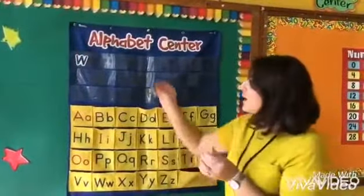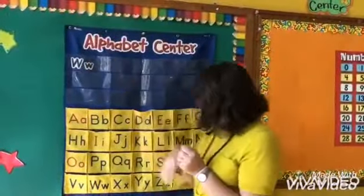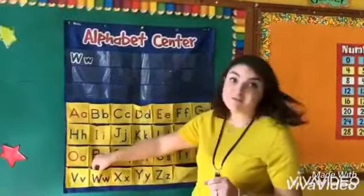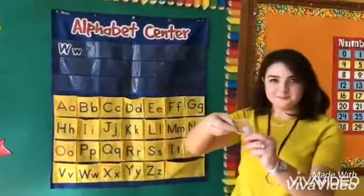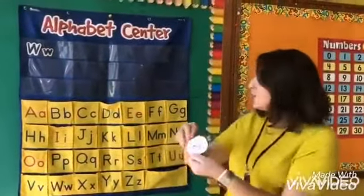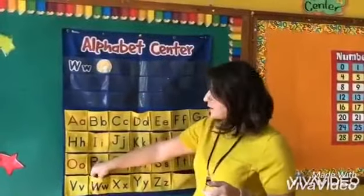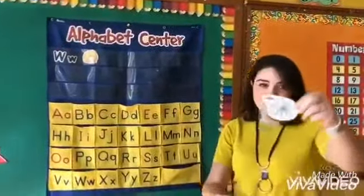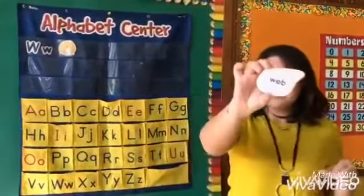Let's see what we can find in our alphabet center. And the letter W is here. Let's see our first word. What's this? It's a wig. What else can we find? I'm sure you know what this one is. It's a web for a spider. Web.